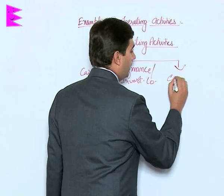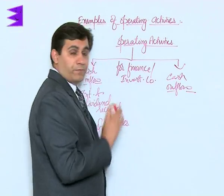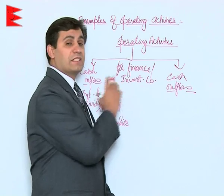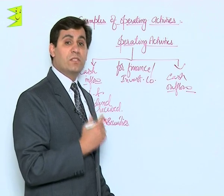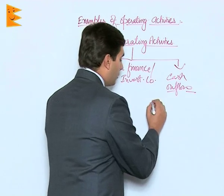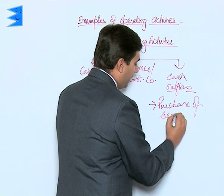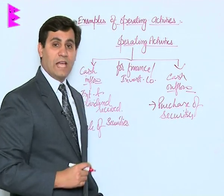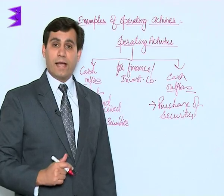Coming to cash outflows for a finance company, since investing money into shares or assets of another company is a regular business activity, any cash outflow on account of purchase of assets of other companies is considered an operating activity. So purchase of securities is an operating activity, and since we are purchasing securities, it results in outflow of cash, which is included under the cash outflow part of operating activities.